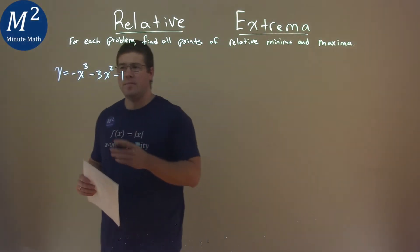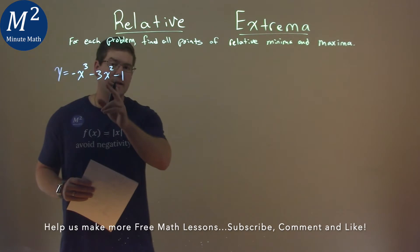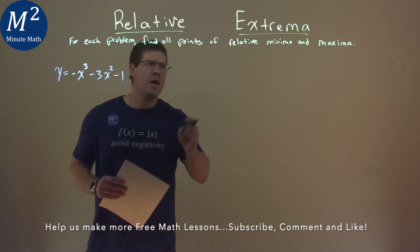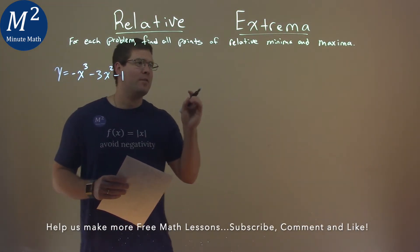We're given this problem right here: y equals negative x to the third power minus 3x squared minus 1, and we have to find all the points of a relative minimum and maximum.